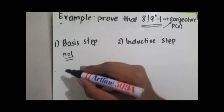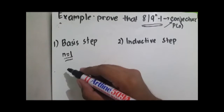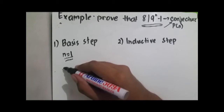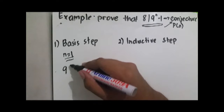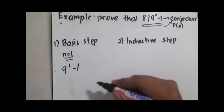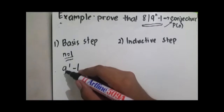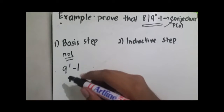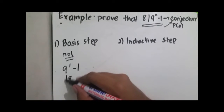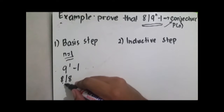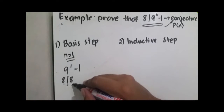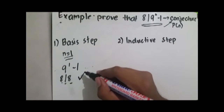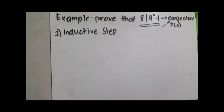We will substitute n by 1. We have 9 raised to 1 minus 1, which gives us 8. And 8 divides 8, so our statement is true.